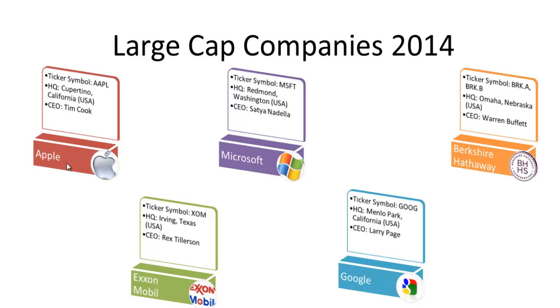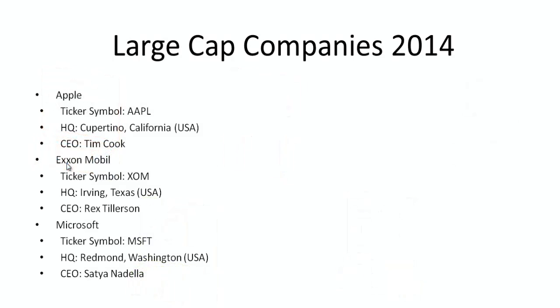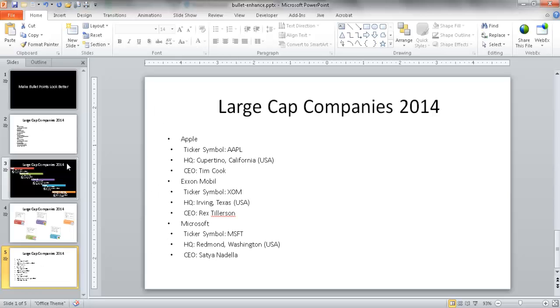I'm going to go ahead and just take three of the companies here — Apple, Exxon, and Microsoft — and show you how this can be done pretty quickly. Let me go ahead and escape to get out of the slideshow view.